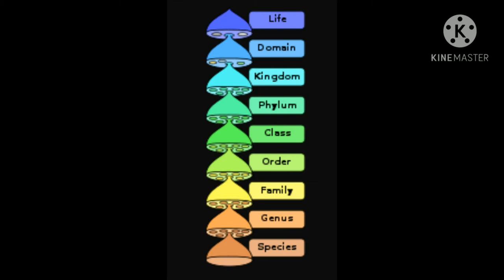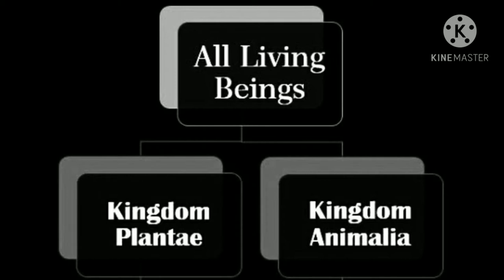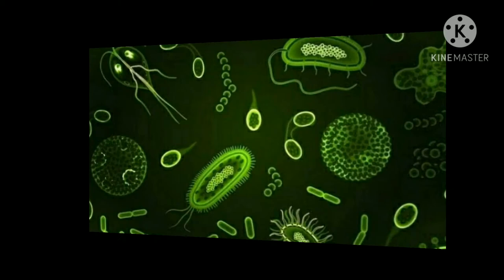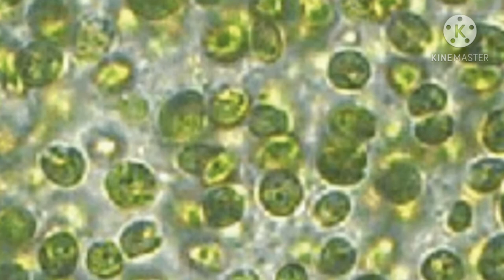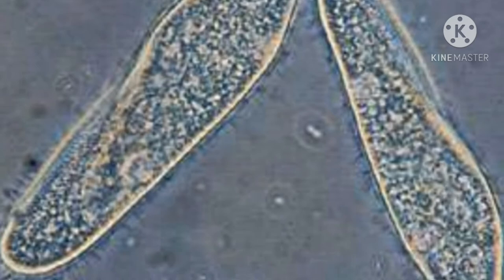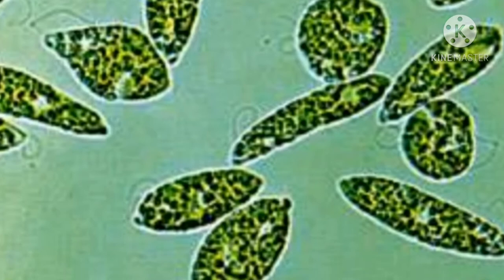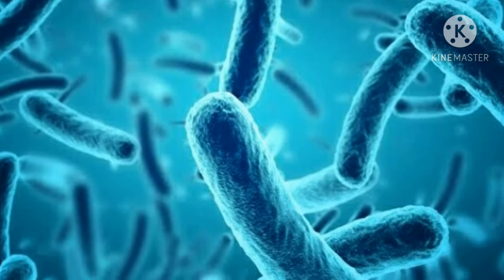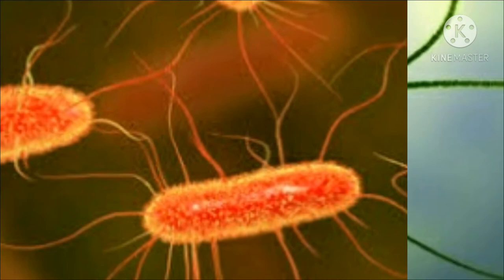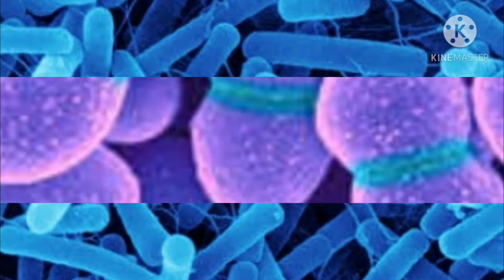Until the 18th century, the classification of living organisms placed all organisms into one of two kingdoms: plant and animal. In microbiology, we study some organisms that are predominantly plant-like, others that are animal-like, and some that share characteristics common to both plants and animals. Since there are organisms that do not fall naturally into either the plant or the animal kingdom, it was proposed that new kingdoms be established to include those organisms which are typically neither plants nor animals.